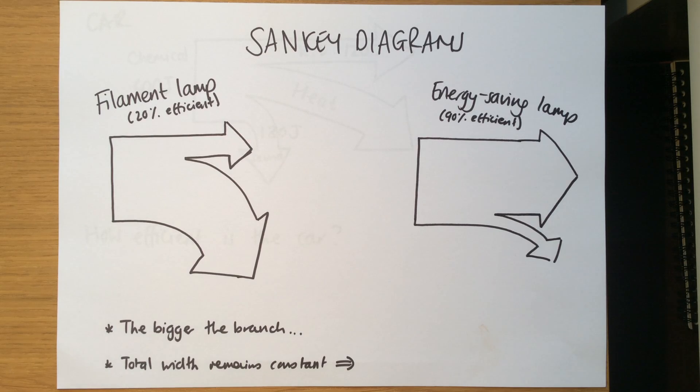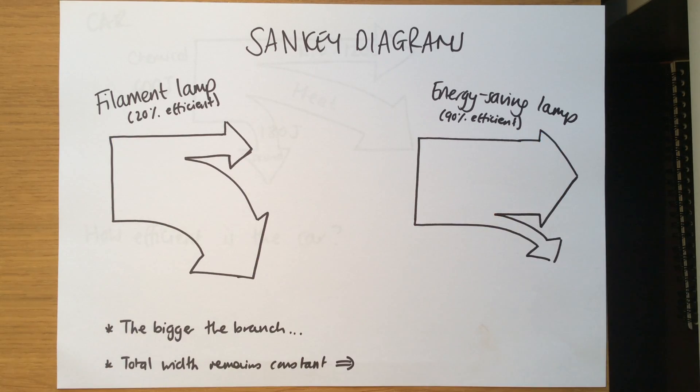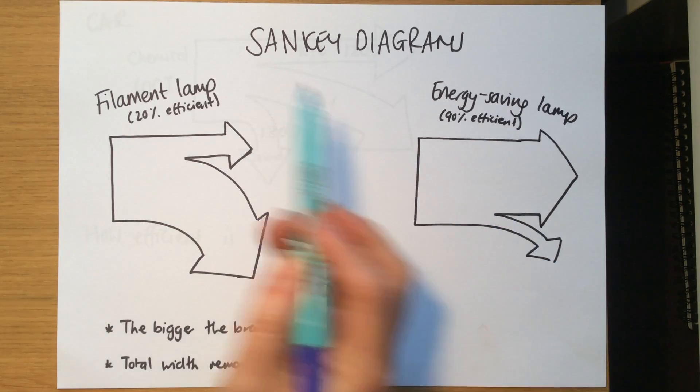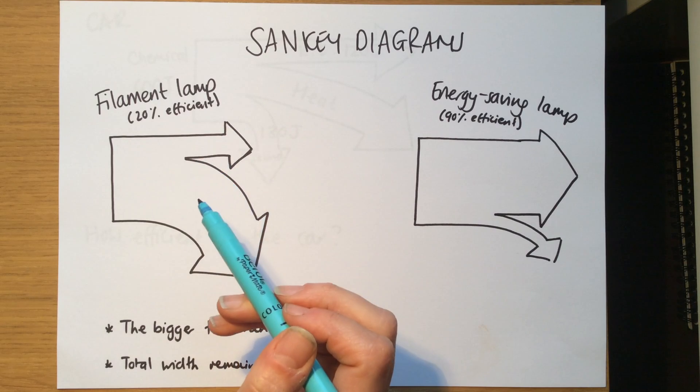Here I've got two Sankey diagrams. We're going to describe how they work. This is for a filament lamp and this is for an energy saving lamp. If we remember from the last video, the difference between these two is that filament lamps are much less efficient. They use much less energy usefully and waste much more energy.